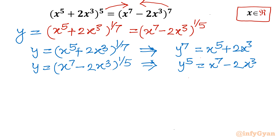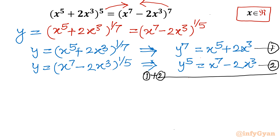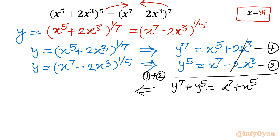Let me call these equation number 1 and equation number 2. I will add them. Adding equation 1 plus equation 2 gives: left hand side y⁷ + y⁵, and on the right hand side the 2x³ terms cancel, leaving x⁷ + x⁵. From here we can conclude x must equal y.